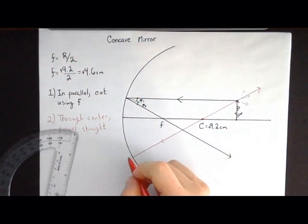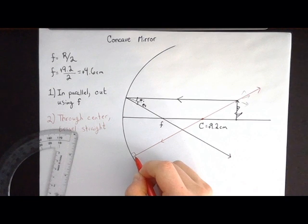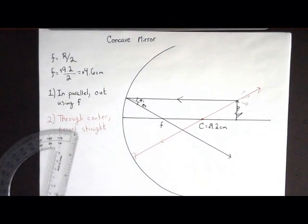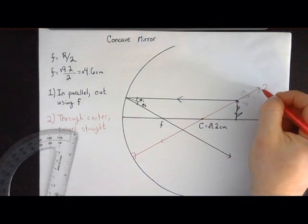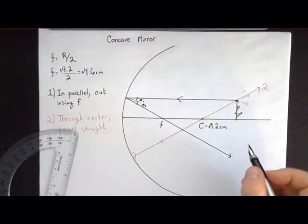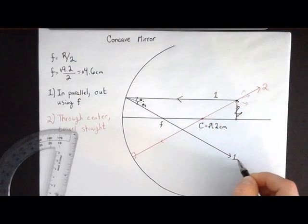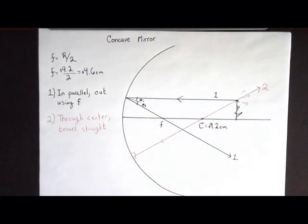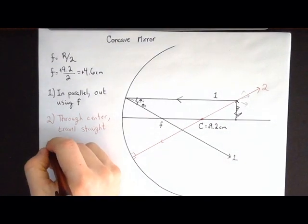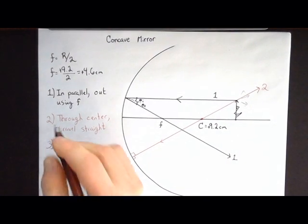You can see that such a ray meets the mirror at 90 degrees so it bounces straight in and back out. So that is ray number two, and then ray number three, again same procedure as with the lens.